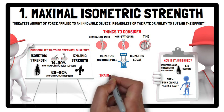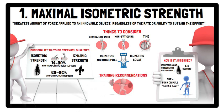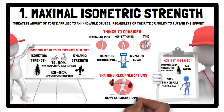In terms of how to train maximal isometric strength, heavy strength training emphasising a concentric start and end portion of the range of motion is recommended. Maximal isometric tasks can also be used and obviously have the greatest transfer to maximal isometric strength; however, they have relatively limited transfer to other strength qualities.